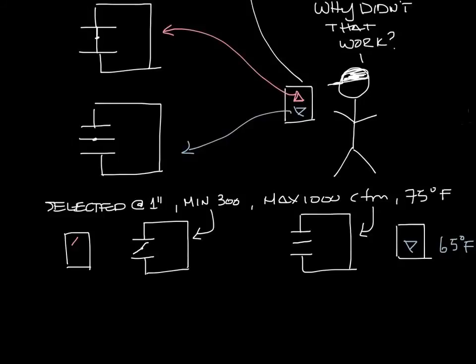And when he turns the thermostat to 85 degrees, the box controller sees that the space is 75 degrees, that's way too cold, and will drive the box to minimum CFM, not fully closed.